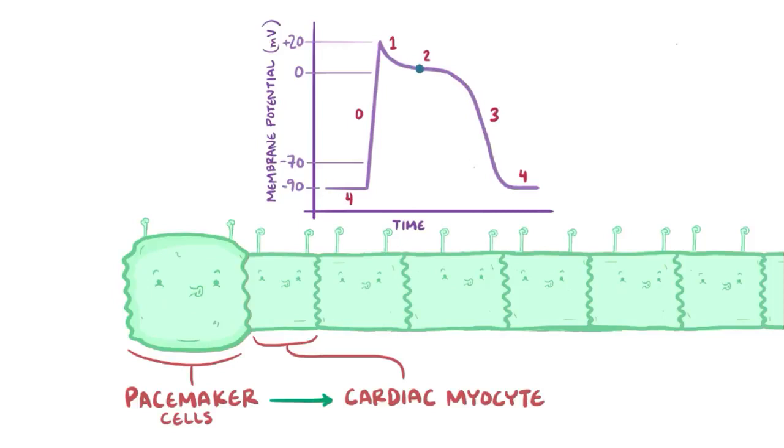In phase 2, calcium channels open up, and there's an influx of calcium ions that counterbalances the potassium ion outflux, so it's called the plateau phase. In phase 3, calcium channels close but the potassium channels stay open, so there's an overall outflux of potassium ions that brings down the charge that repolarizes the myocyte, and then it enters the resting state again.